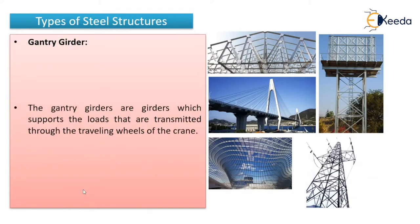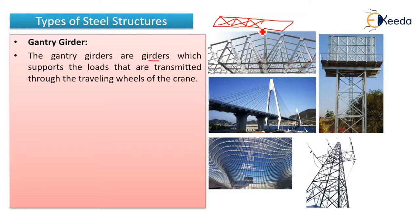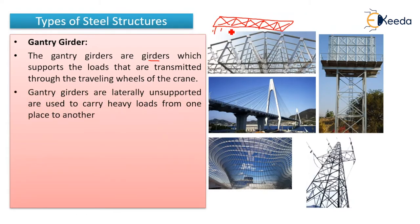Next, we have gantry girders. Gantry girders are girders that support loads transmitted through the travelling wheels of a crane. They resist moving loads, are laterally unsupported, and are used to carry heavy loads from one place to another. They are steel structures used for carrying heavy loads.